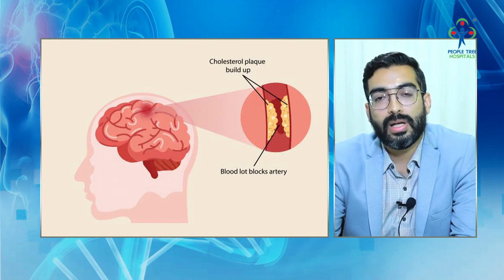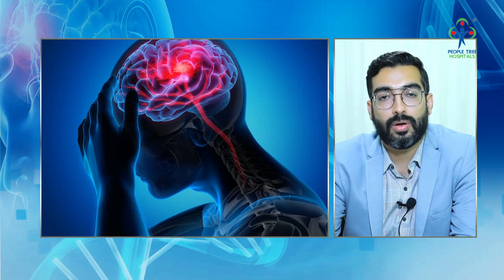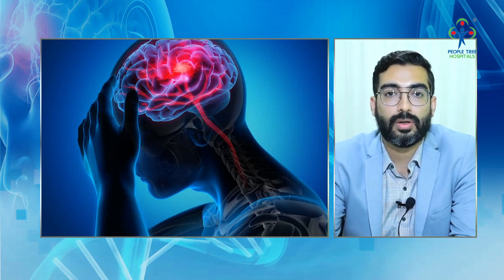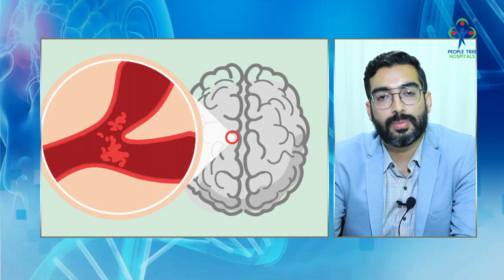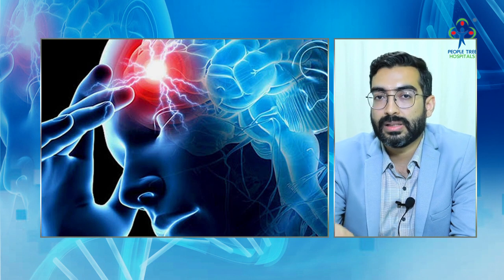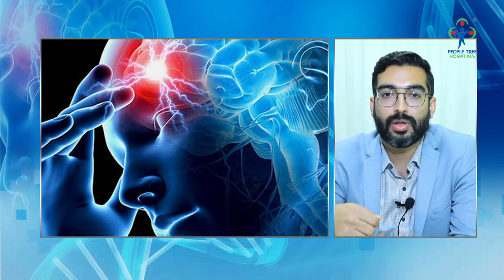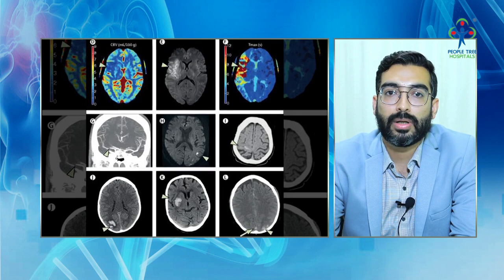In cases where medications cannot be given, or if the patient reaches within 6 hours of onset of symptoms, stroke can be reversed by mechanical thrombectomy. This is an endovascular procedure where we use a stent to retrieve the clot and restore blood flow to the brain.